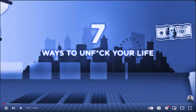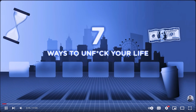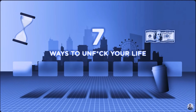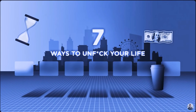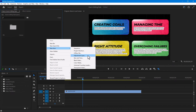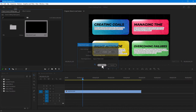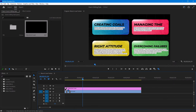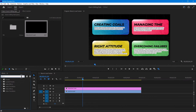The next effect he mostly uses for his animations is the wave effect. To create this effect, create a new adjustment layer and drag it onto your timeline. Then go to Effects and search for Turbulent Displace. Apply it onto your adjustment layer.